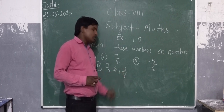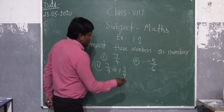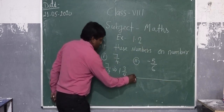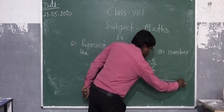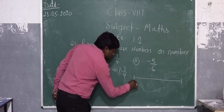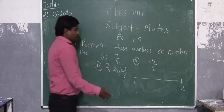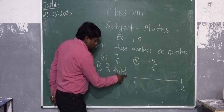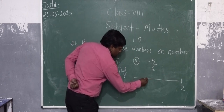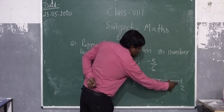This number, 1 and 3 by 4, lies between 1 and 2. First of all, we draw a straight line and this number lies between 1 and 2. From the denominator, denominator is 4, so we divide this line into 4 equal parts. This is the first part, second part, third, and this one is the fourth.